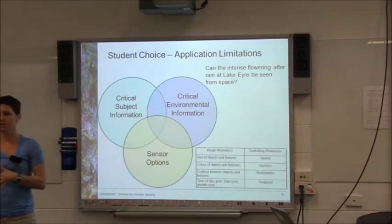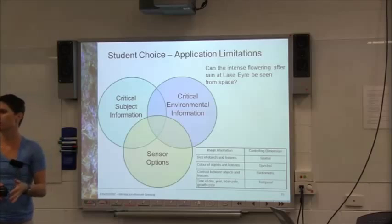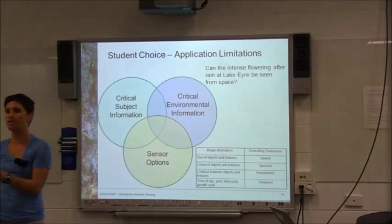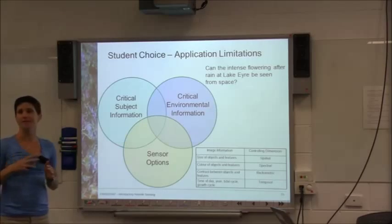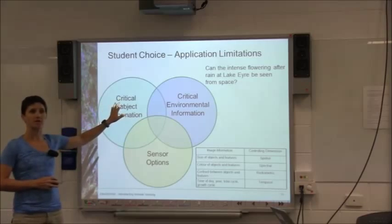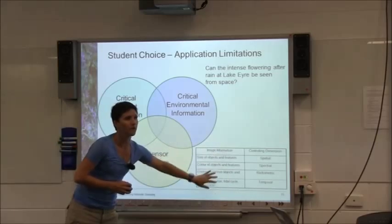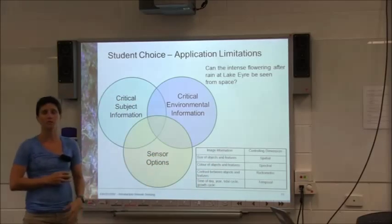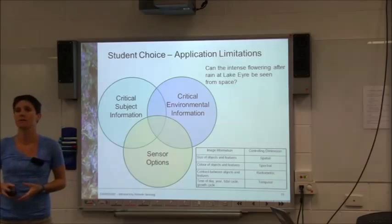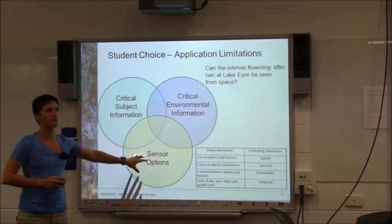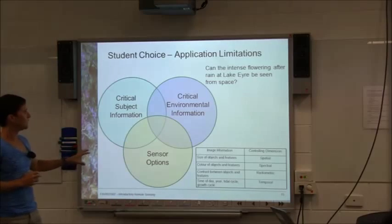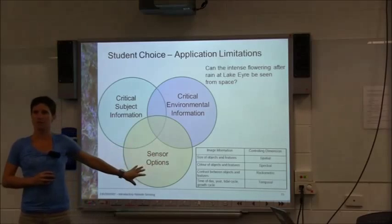For any topic you're interested in — can remote sensing be used to map coral bleaching, can it be used to track a fire front — whatever the application, we go through exactly the same process. The subject information forms one column of the table: what is it about the feature we're trying to look at; the environmental information that might cause an impediment or assist; and the associated sensor options. What we really need is for these things to agree with our potential sensor options.